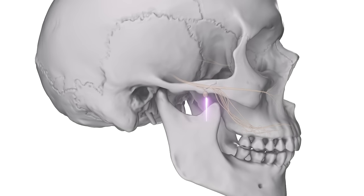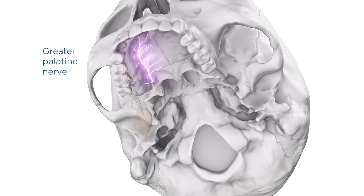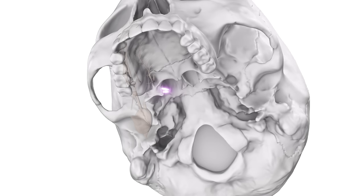Palatine branches of the pterygopalatine nerve pass down the pterygopalatine canal and exit via the foramina on the posterior lateral aspect of the hard palate. The greater or anterior palatine nerve emerges through the greater palatine foramen to supply general sensation to the soft tissues of the hard palate and palatal gingiva. The other branches exit from the lesser palatine foramina and innervate the soft palate, uvula, and tonsillar area.